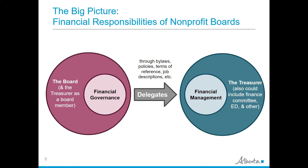Another key responsibility of the board is to ensure that the financial management function within the organization is carried out, and the board may choose to delegate authority or financial management functions to others. Depending on the size and structure of the organization, the board may choose to delegate some or all of the financial management functions to the treasurer, the finance committee, the executive director, other staff or volunteers, etc. This delegation may be through the organization's bylaws, board policies, terms of reference, job descriptions, etc.